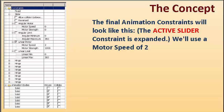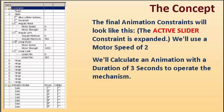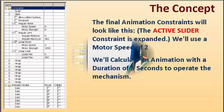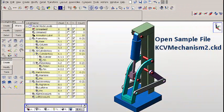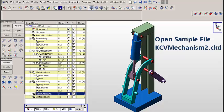The final animation constraints will look like this. The active slider constraint is expanded. We'll use a motor speed of two. We'll calculate an animation with a duration of three seconds to operate the mechanism. So let's work with an actual file — sample file kcv mechanism2.ckd.